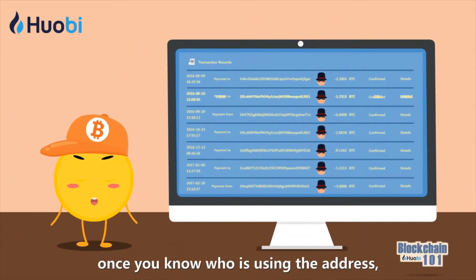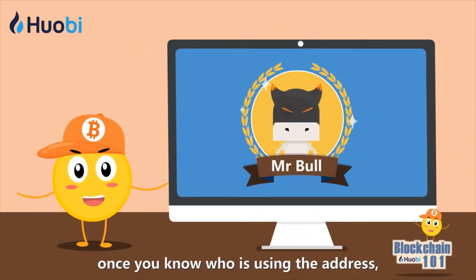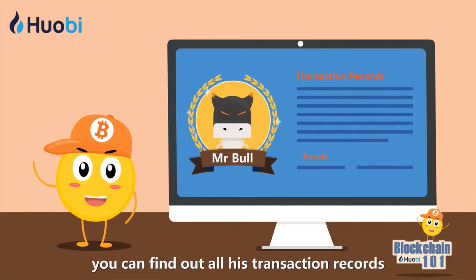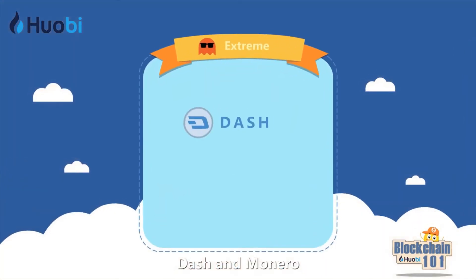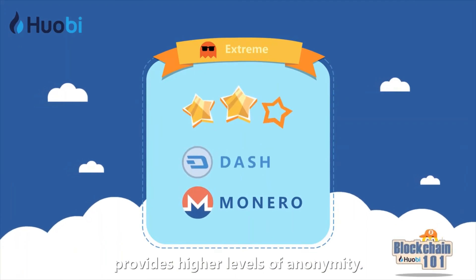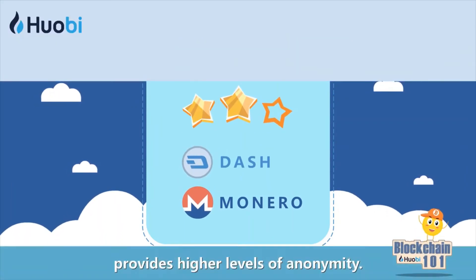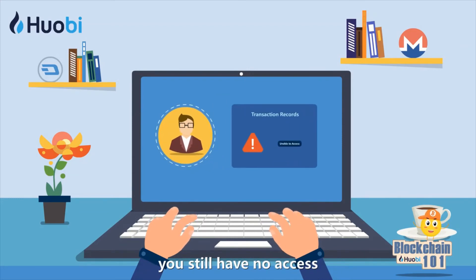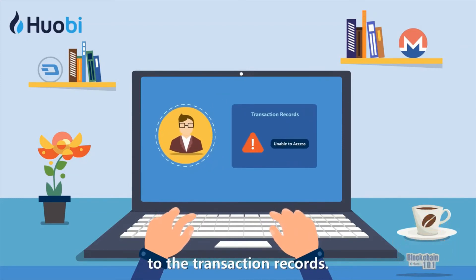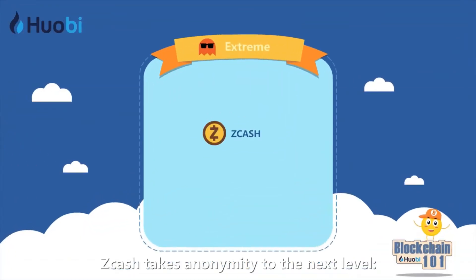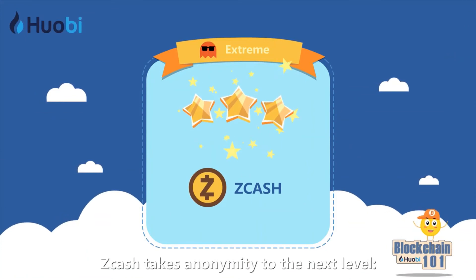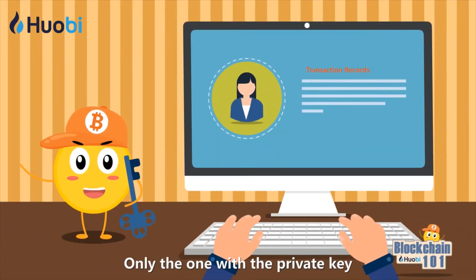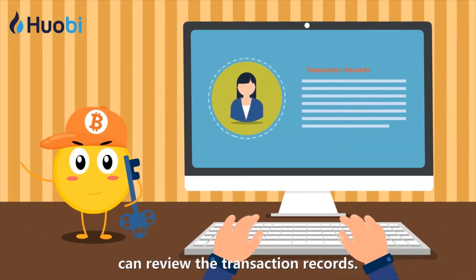However, once you know who is using the address, you can find out all their transaction records and assets. Dash and Monero provide higher levels of anonymity — even if you have found out who is behind the address, you still have no access to the transaction records. Zcash takes anonymity to the next level: only the one with the private key can review the transaction records.